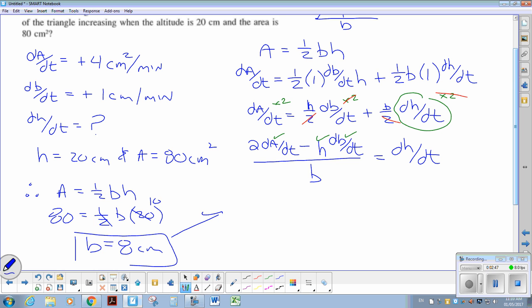So that gives me the information to finish the question. So 2 dA by dt is 4, minus h is 20, dB by dt which is 1, over my b value which is 8. Using control of my equal sign, here we go.